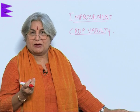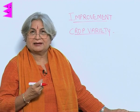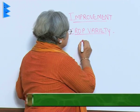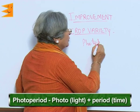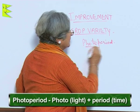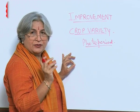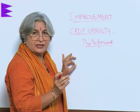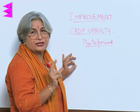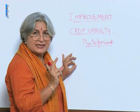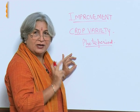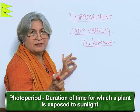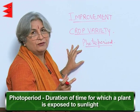The variety also depends upon certain factors — climatic conditions, temperature, soil, and the photoperiod. What is photoperiod? Photo means light and period means time. A plant not only needs sunlight for photosynthesis, but in addition to this every plant needs a certain exposure to light, and unless it gets that light period it cannot grow properly. There are short day plants and long day plants, and the duration of time for which a plant is exposed to sunlight is called photoperiod.